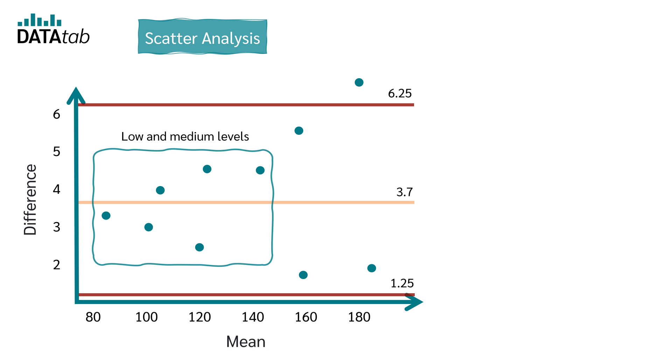For example, the devices might agree more when glucose levels are in a low and medium range, but disagree at high levels.